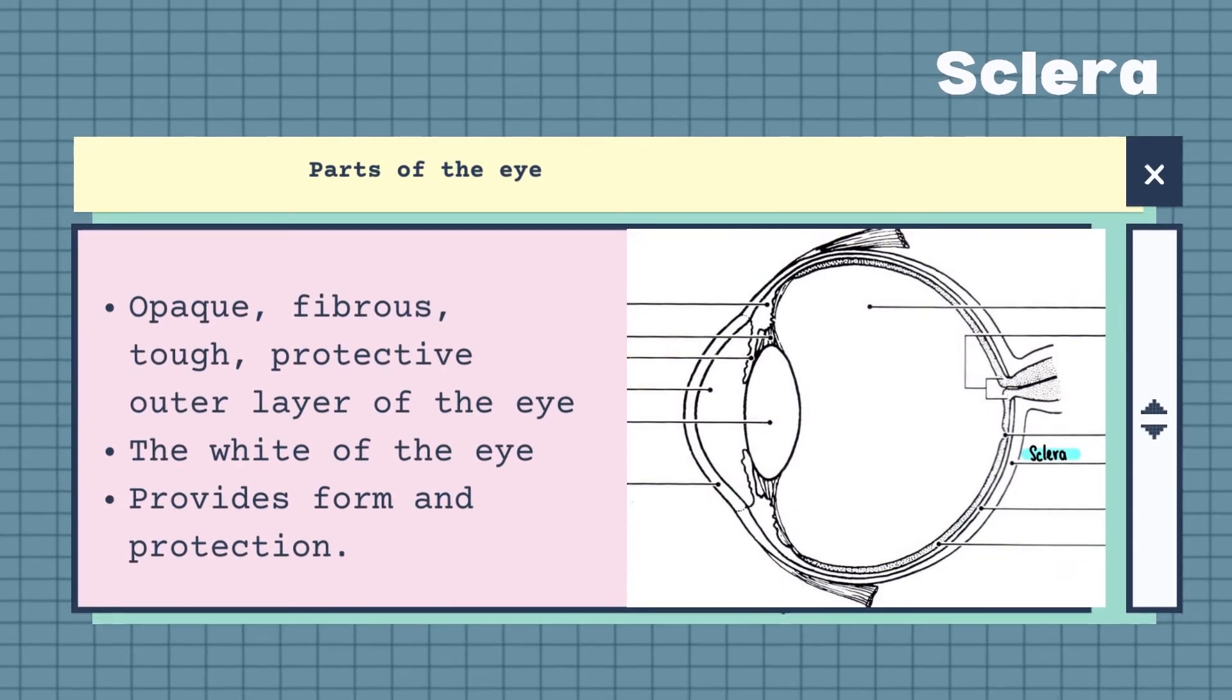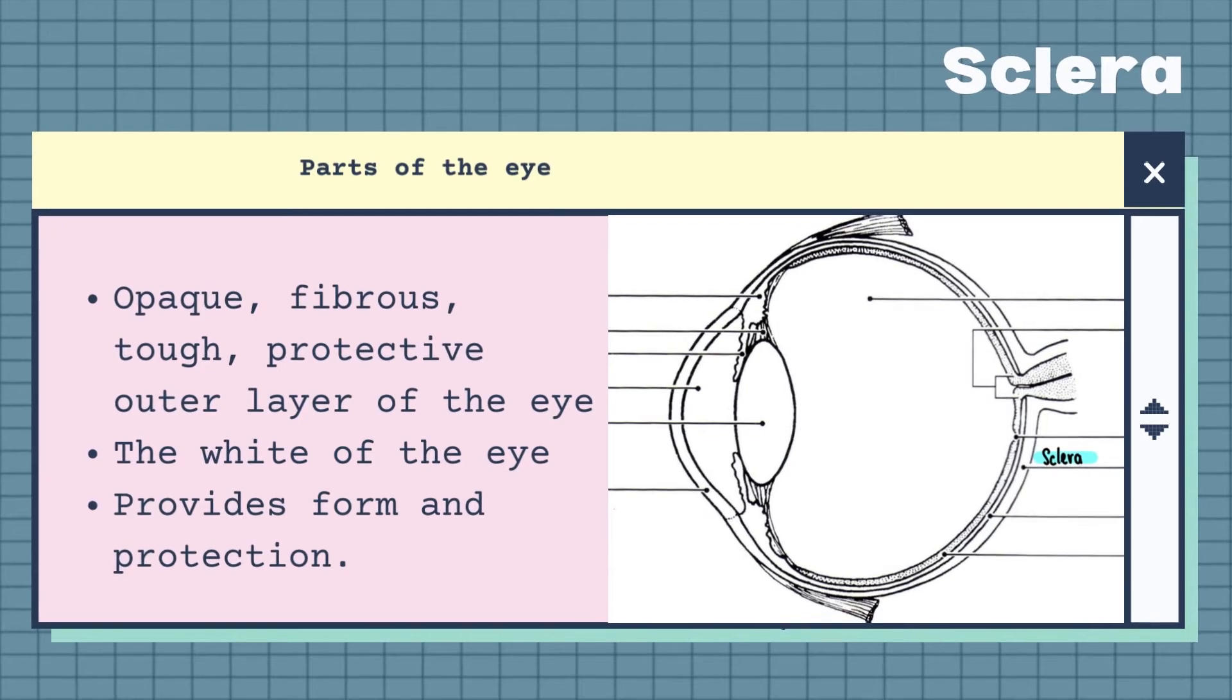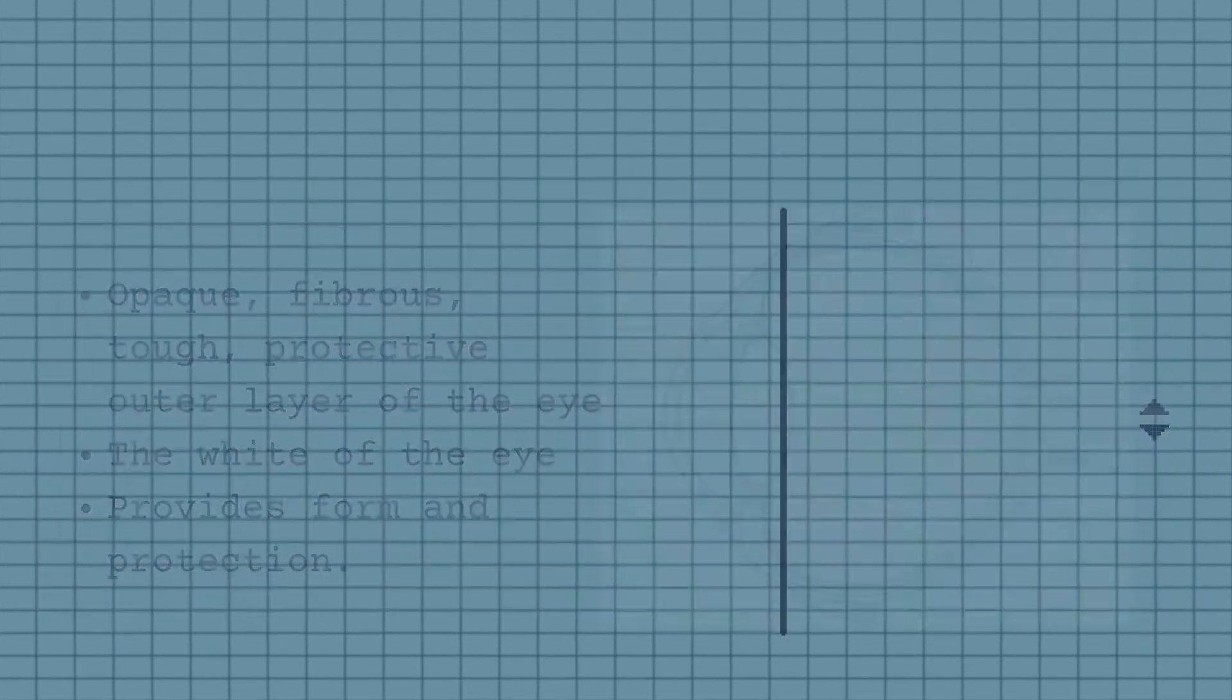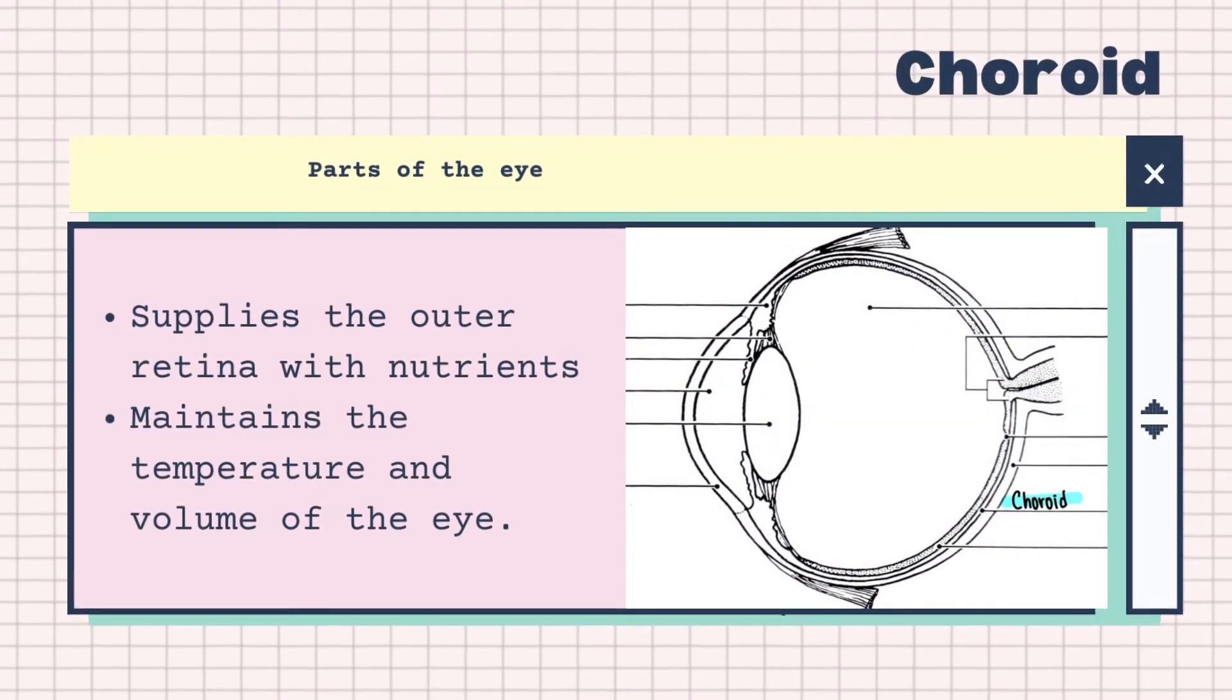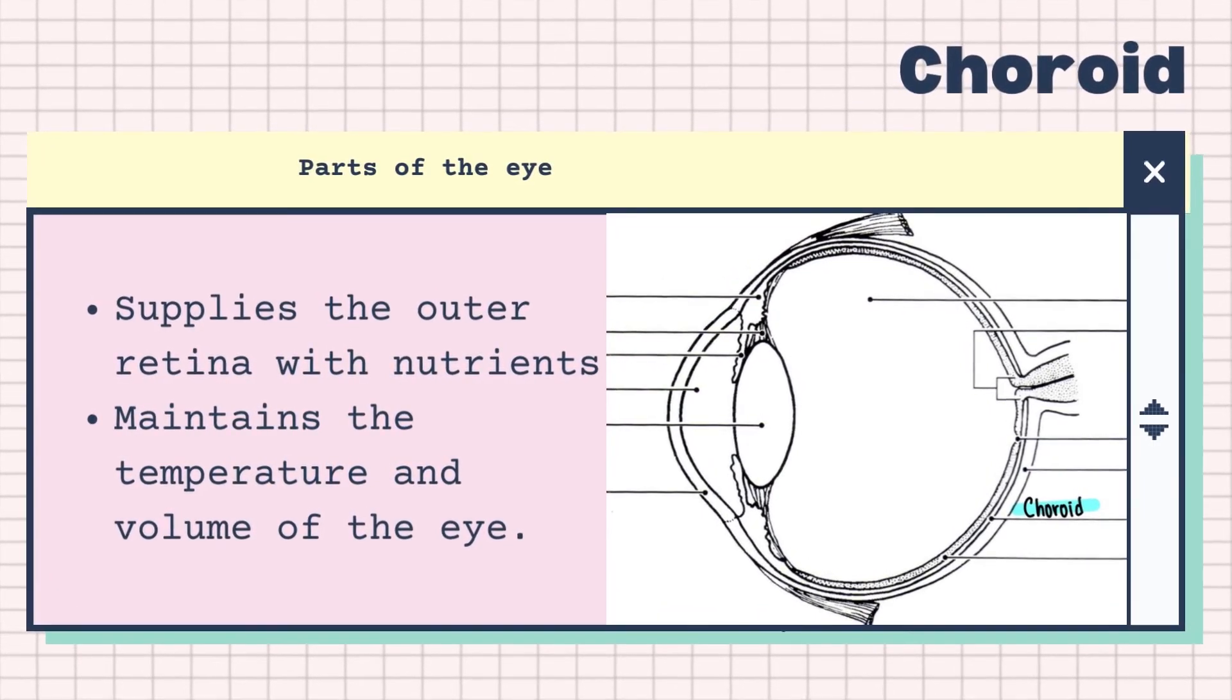The sclera is the opaque, fibrous, tough and protective outer layer of the eye. It is also known as the white of the eye and it provides form and protection. The choroid supplies the outer retina with nutrients and it maintains the temperature and volume of the eye.